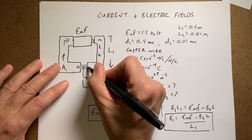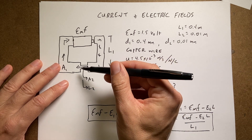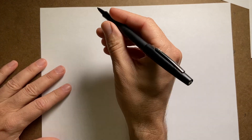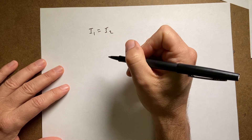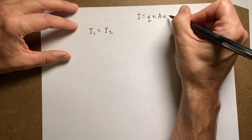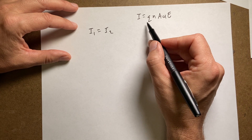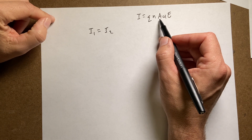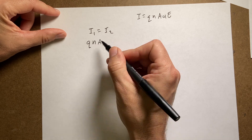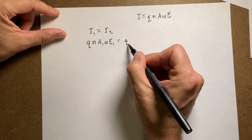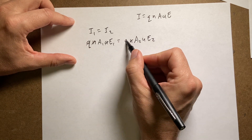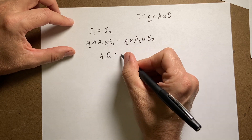Now let's use the junction rule. If I look at this junction, the electric current coming into it, I1, has to equal the current going out, I2. The definition of current is I equals Q times N times A times U times E — where Q is the charge carrier value, N is the number of carriers per volume, A is the cross-sectional area, U is the electron mobility, and E is the electric field. So for current one and two: Q N A1 U E1 equals Q N A2 U E2. Since both are copper, Q, N, and U are the same and cancel, giving A1 E1 equals A2 E2.